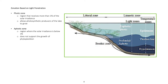Zonation based on light penetration includes two zones: the photic zone is the region that receives more than 1% of solar irradiance, allowing photosynthetic producers of the lake to grow. The aphotic zone is the region where solar irradiance is below 1% and does not support the growth of phytoplankton.